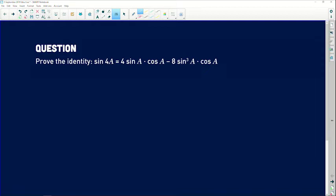Prove the identity sin 4A equals 4 sin A cos A minus 8 sin cubed A cos A.